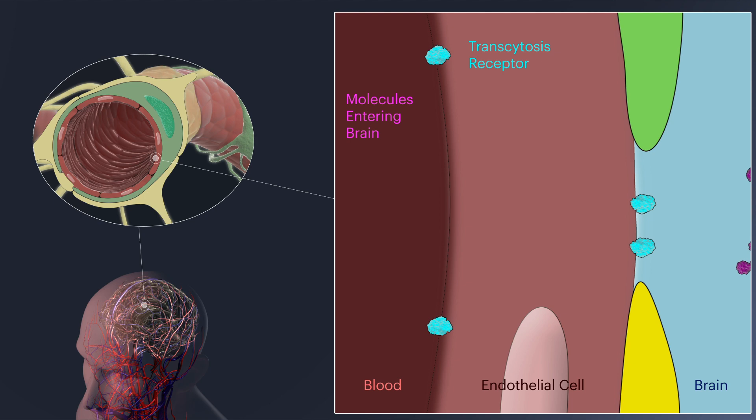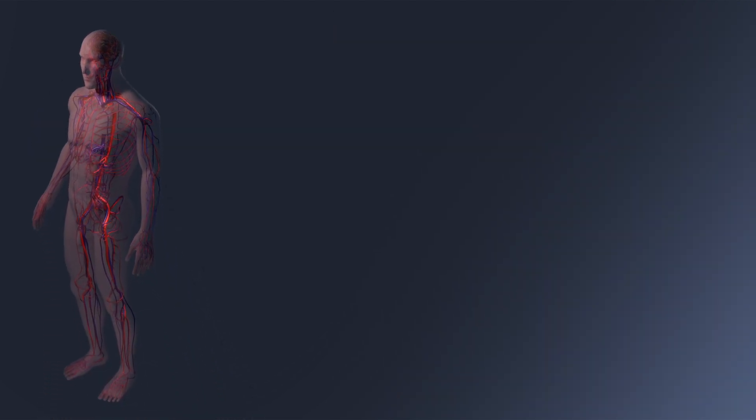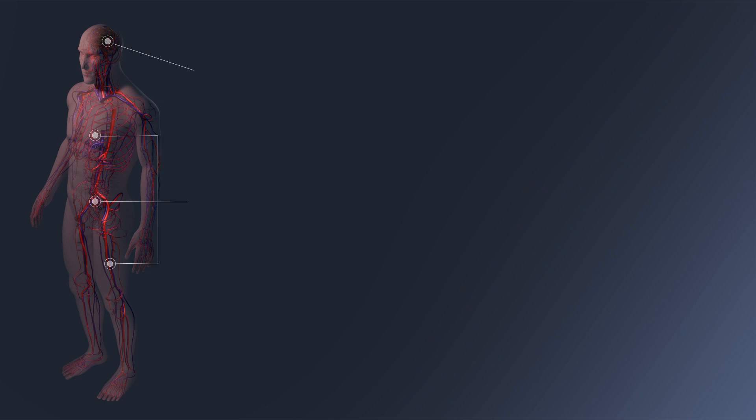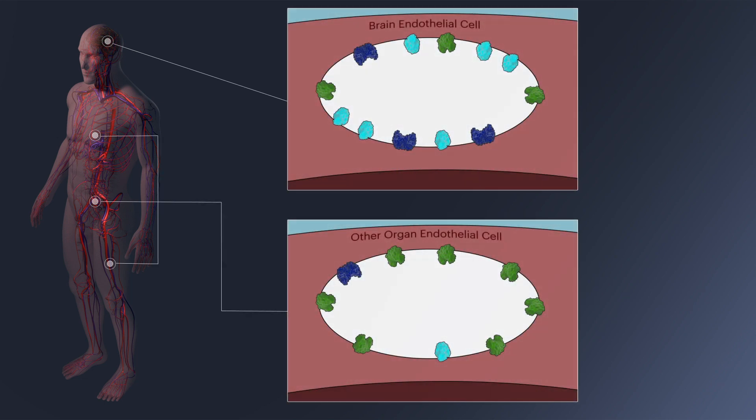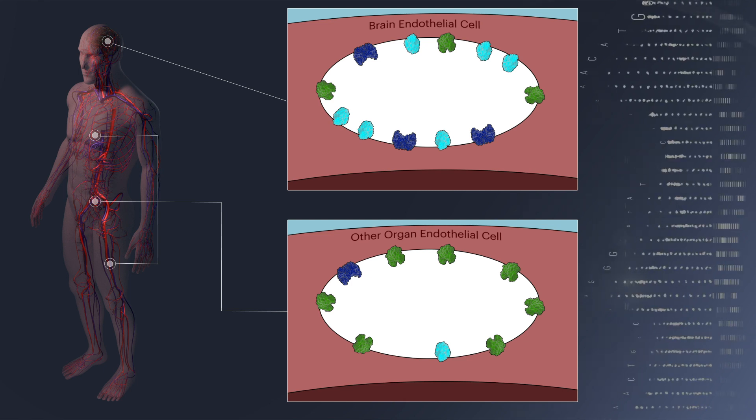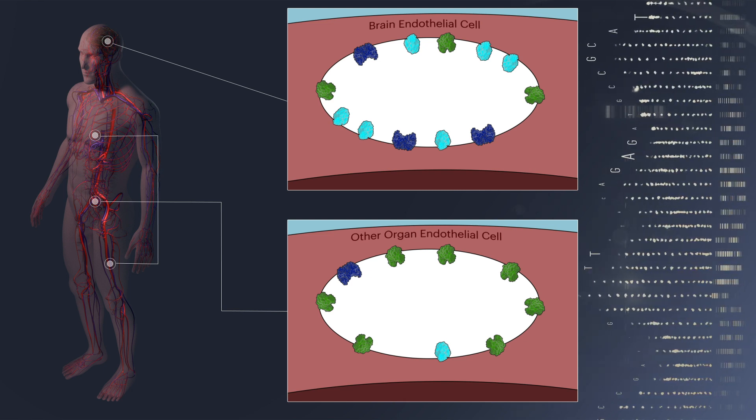Transcytosis receptors are expressed in blood vessels of all parts of the body. To identify those that are enriched in the blood-brain barrier and could be useful for drug delivery into the brain, these researchers are building a database from the results of deep protein and RNA expression analysis.